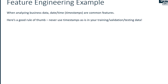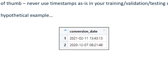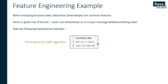To really cement this idea, let's go with a hypothetical example. Here we have a table of data with a feature called conversion date — a timestamp for when somebody converted, such as signing up for a newsletter or making a purchase. This is a timestamp because it has a date component and a time component in 24-hour format. Take this data as-is and think about the CART algorithm — how it works deep down, what it optimizes for, and the fact that it's greedy. What would CART do with this data in this representation?